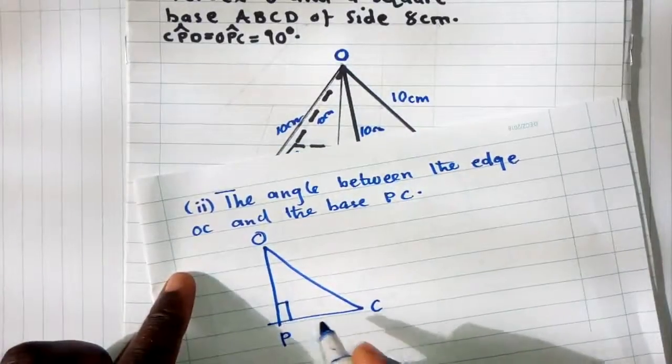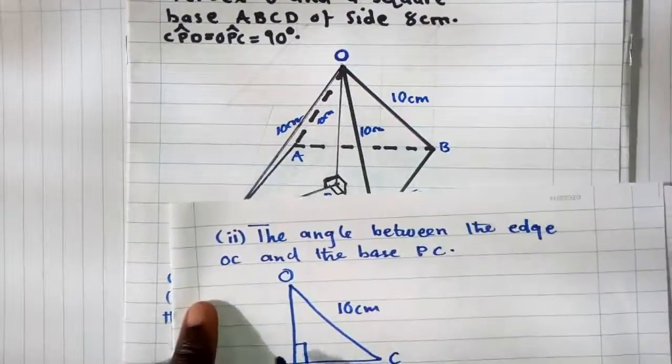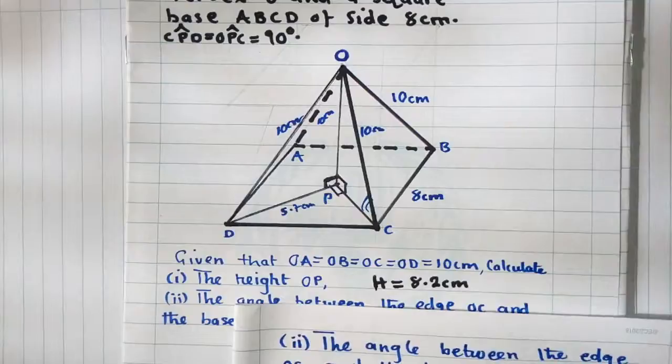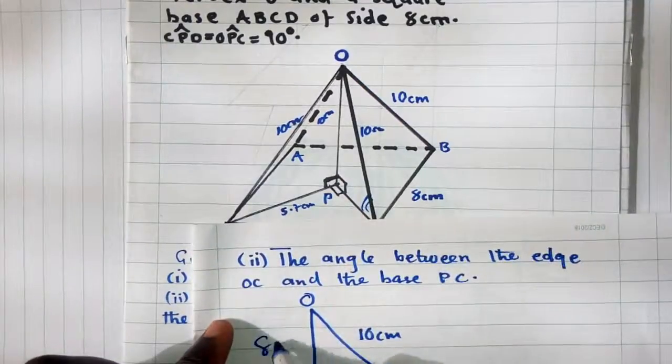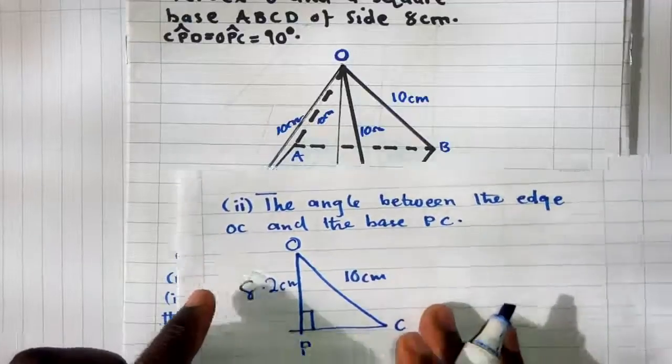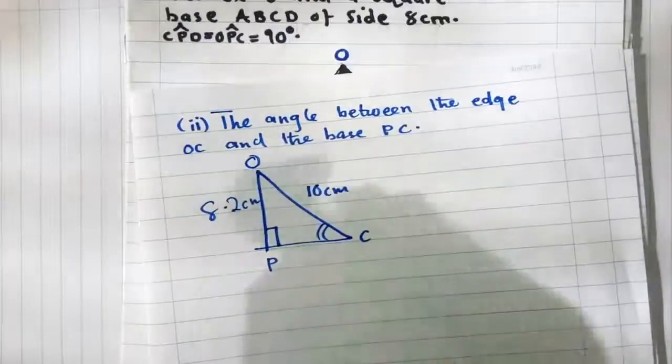This is 90 degrees, right? And here it's 10 centimeters. The height from P to O is 8.2 centimeters. So now they want us to find this angle. We're going to use trig ideas.